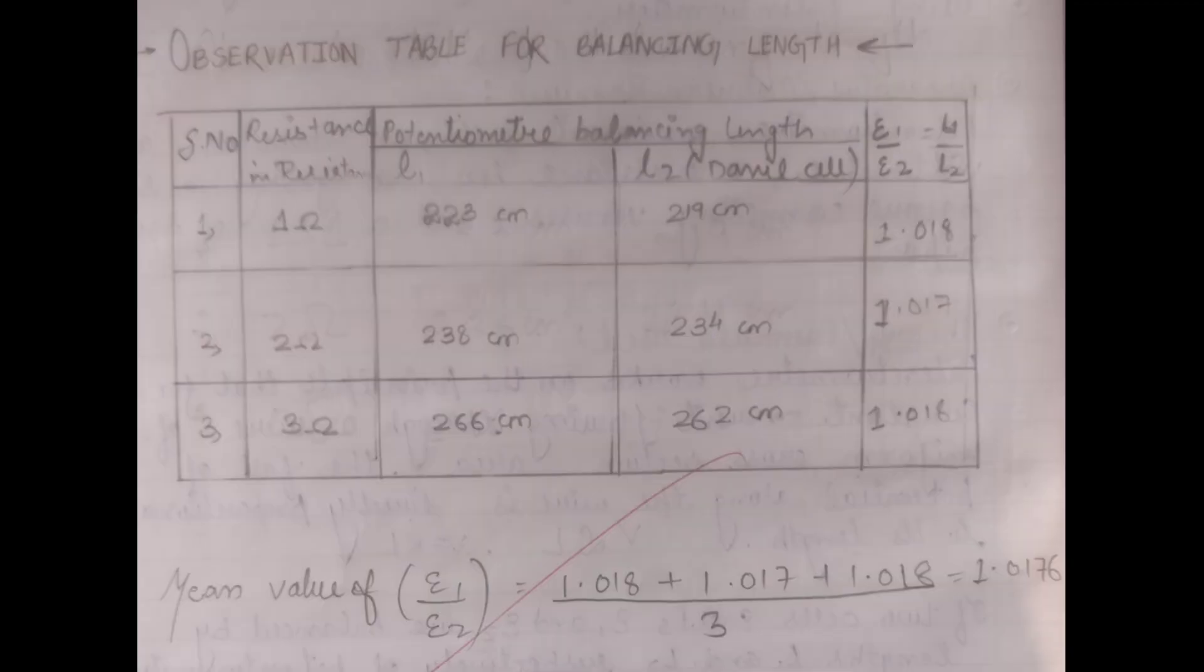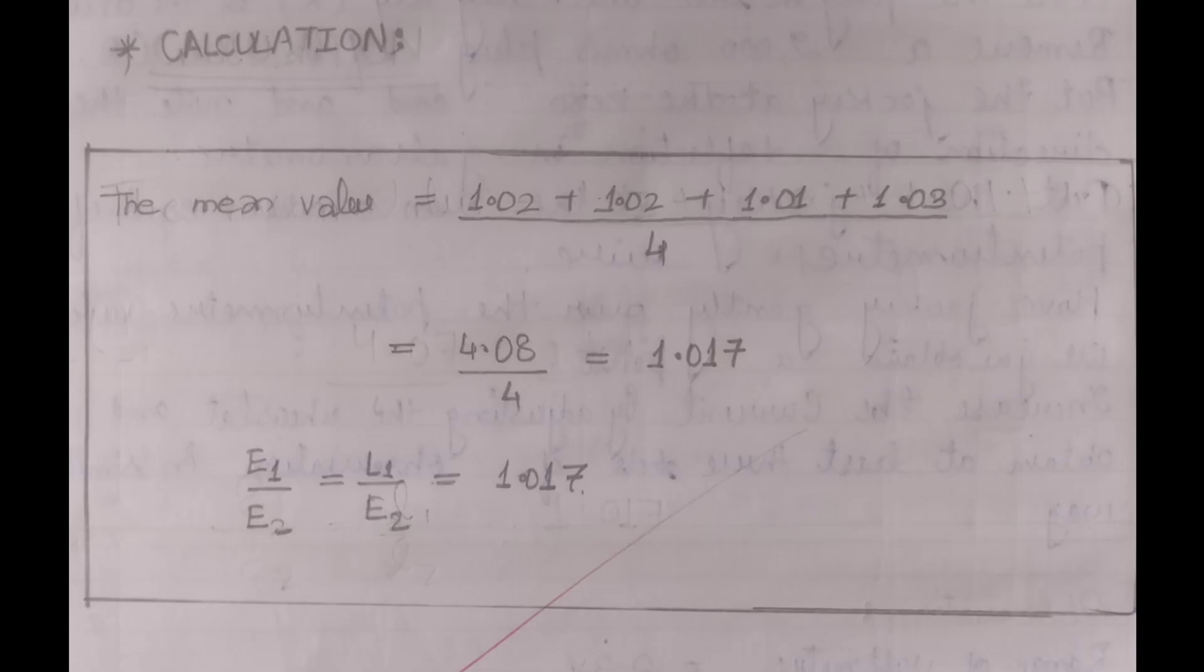This image shows the observation table or you can see the readings that had been obtained while performing this practical. This image shows the calculation for the mean value and the ratio of the EMFs of two given cells.